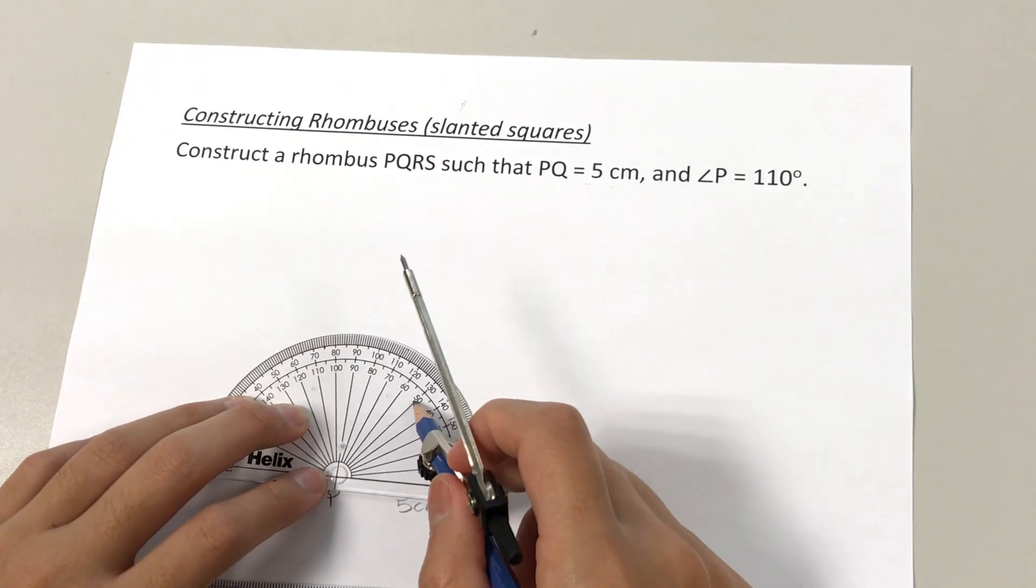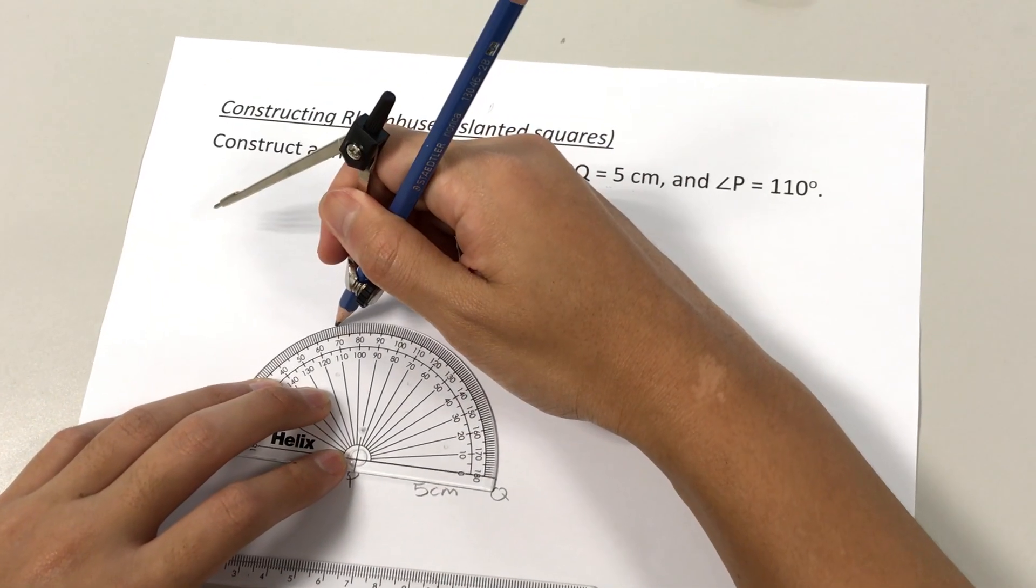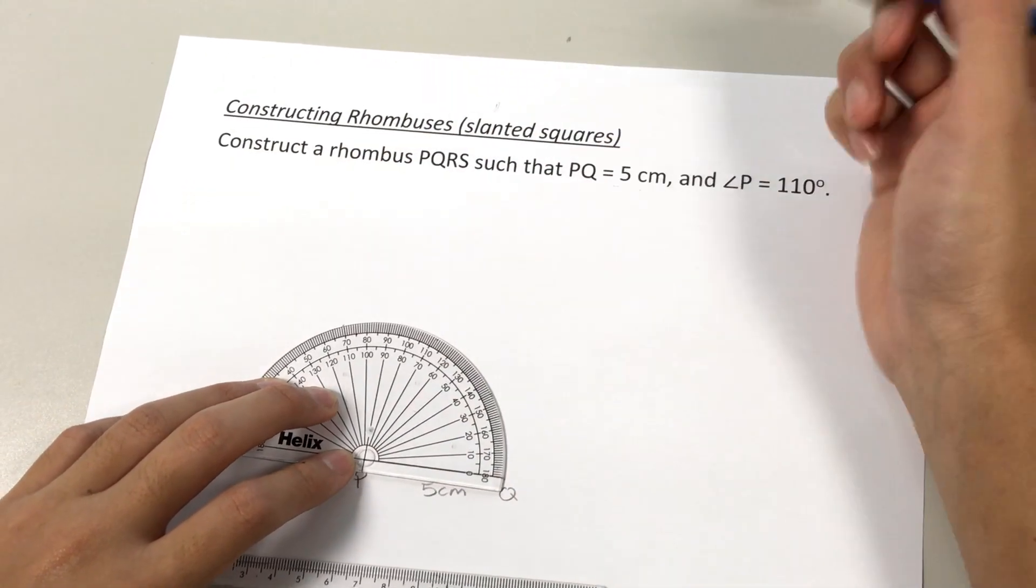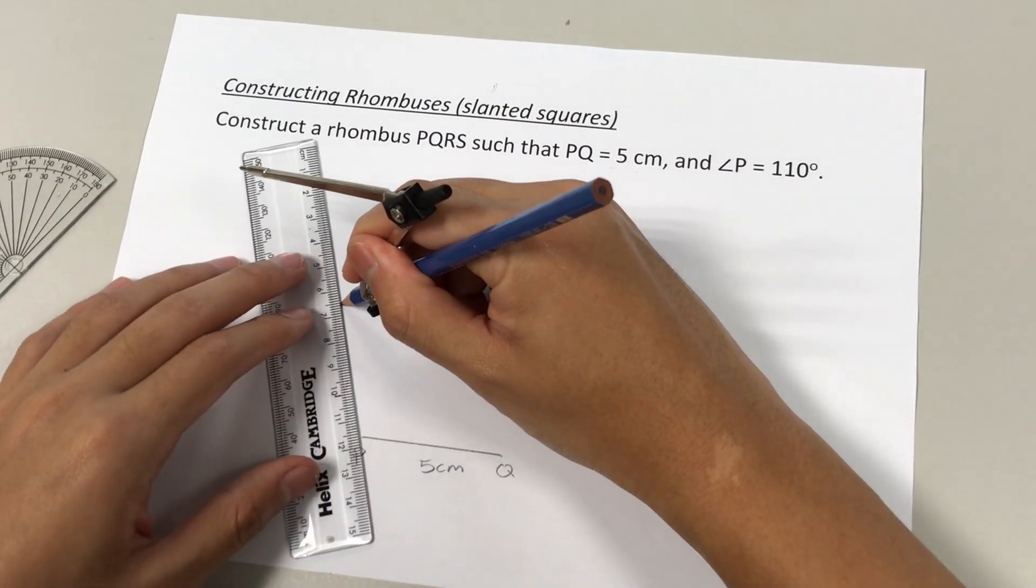So it's 10, 20, 30, 40, 50, 60, 70, 80, 90, 100, 110. Put a marking over here. Okay, we shall draw a line from the marking to P.